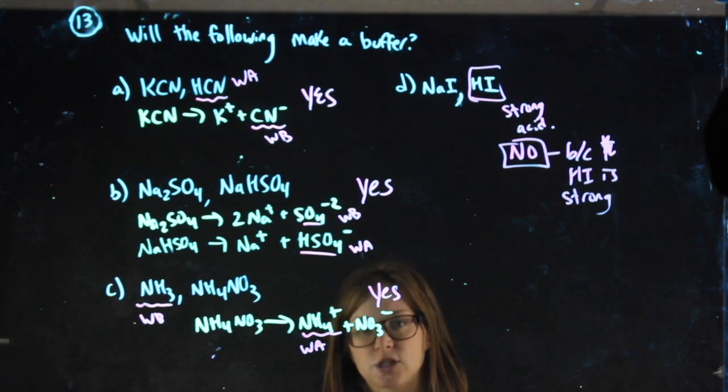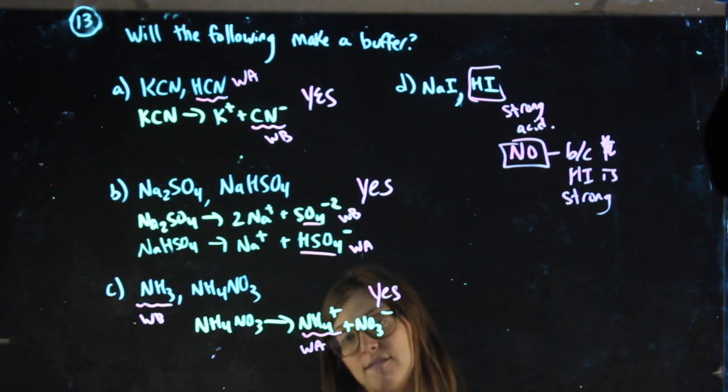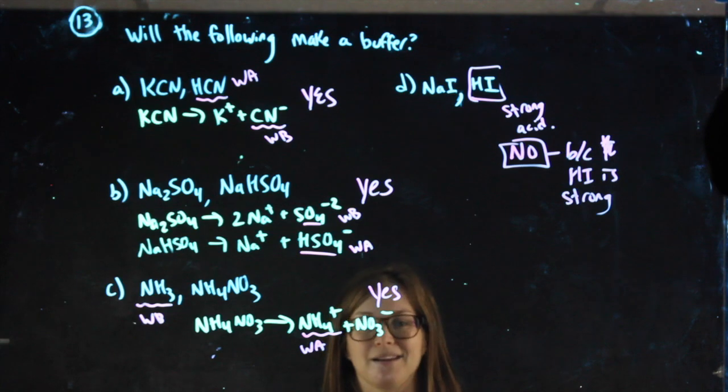Another reason you might end up with something that's not a buffer is if the weak acid and weak base you do have aren't conjugate pairs, meaning they're different by more than one hydrogen.